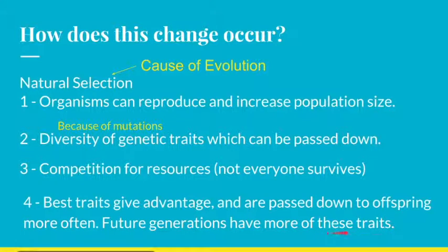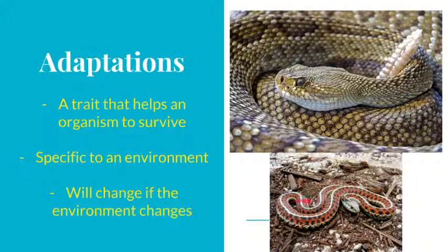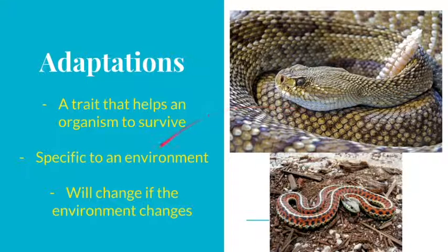When we're talking about these advantageous traits, we use a word to describe them: we call them adaptations. An adaptation is any trait that can help an organism to survive. Snakes have lots of adaptations — in fact, all of our traits are adaptations; they've all at some point helped us to survive. Each adaptation is specific to its environment. The yellowish tan-brown color of one snake is advantageous in its environment, while the red, black, and white coloration of another snake is an adaptation in a different environment with more red and brown soil to blend into. Each adaptation is specific to its environment, and if that environment changes, the adaptations will also change.